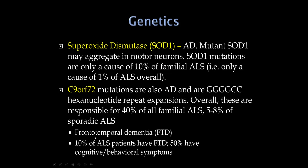About 1 in 10 patients with ALS will have frontotemporal dementia, and overall 50% of ALS patients will have some mild cognitive or behavioral involvement. We'll go into the details of frontotemporal dementia later, but remember there is some overlap with ALS.